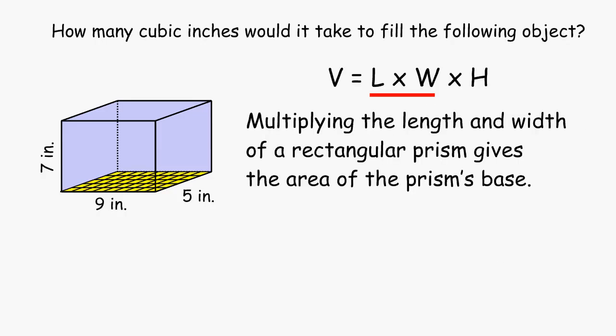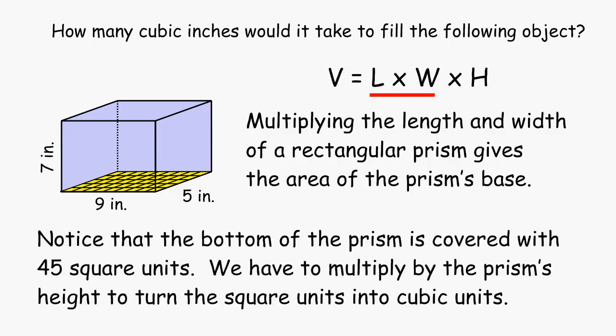The first part of the formula, length times width, will actually give you the area of the prism's base. Notice in this example the base has the dimensions 5 by 9, which gives us 45 square units. So length times width only gives us the area of the prism's base, which is a two-dimensional measurement.